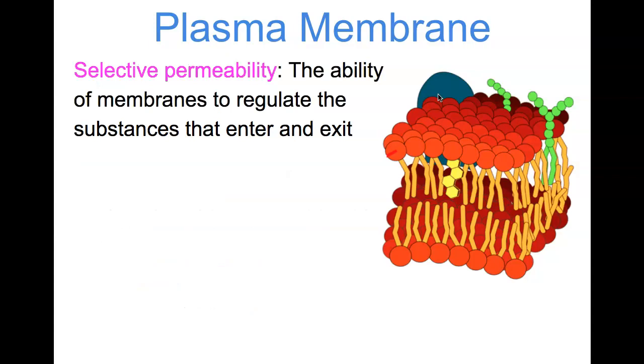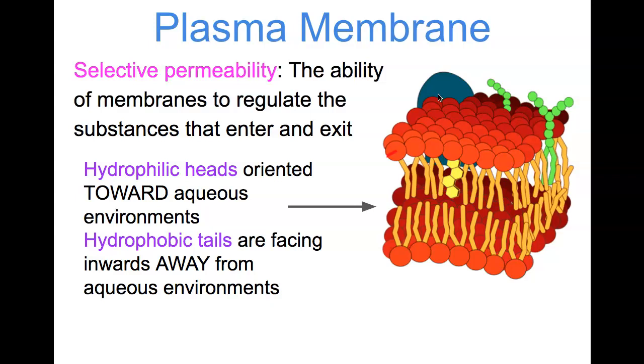The plasma membrane does have selective permeability, and when you talk about permeability you're talking about things being able to pass through the cell membrane and the ability of membranes to regulate substances that are going to either enter into the cell or exit the cell. The hydrophilic heads are going to be oriented towards those water or aqueous environments and the hydrophobic tails are going to be facing inward away from any aqueous environment.